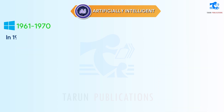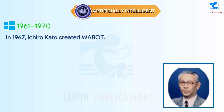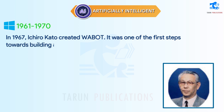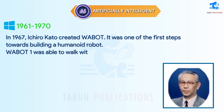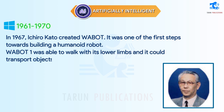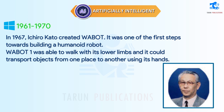In 1967, Ichiro Kato created Wabot 1. It was one of the first steps towards building a humanoid robot. Wabot 1 was able to walk with its lower limbs, and it could transport objects from one place to another using its hands.